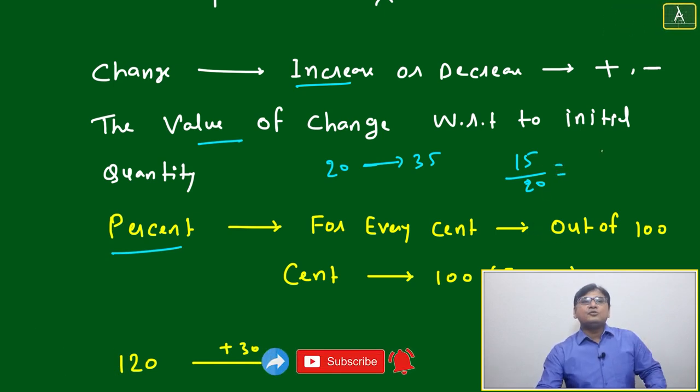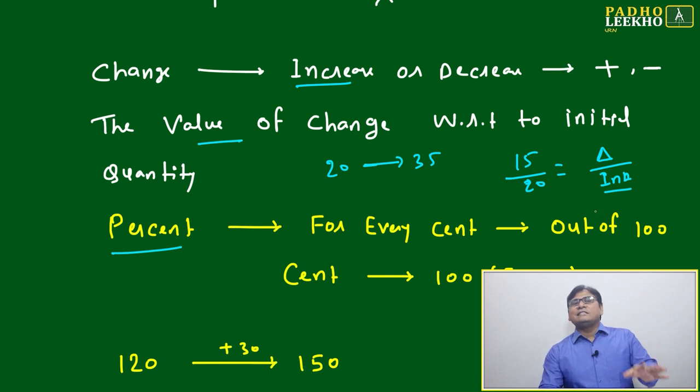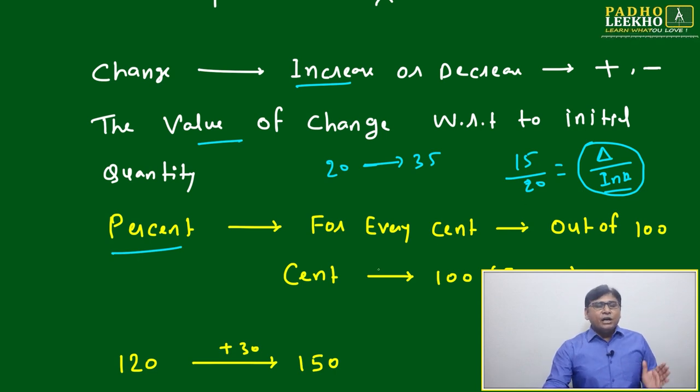That is actually change, which you can say Delta divided by initial, or in school terminology, final minus initial by initial. That is the factor of multiplication - Delta divided by initial.